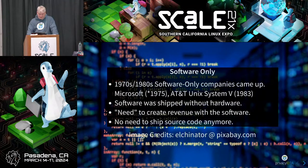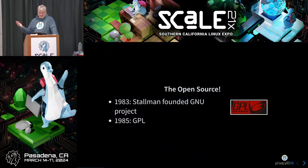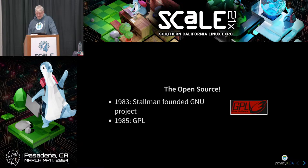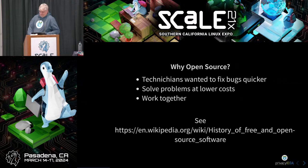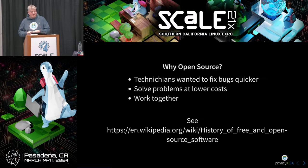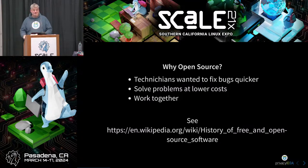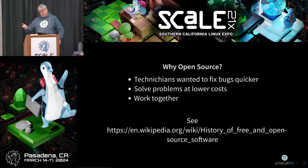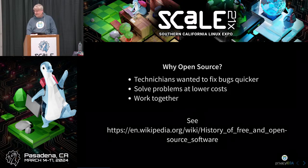However, not all people liked this. In 1983, Richard Stallman founded the GNU project, and this is where the great software license — the GPL — comes from. But why would someone found the GNU project? Why would someone want to do open source? Because you do not like black boxes, because you want to understand things. Technicians want to fix bugs, they want to work together, they want to solve problems quicker at a lower cost. This is why the need for open source still exists.